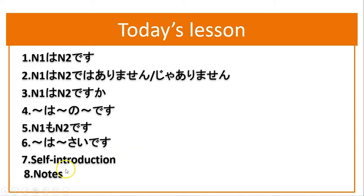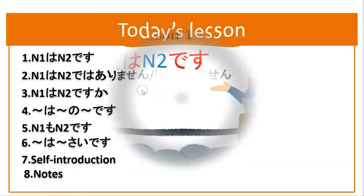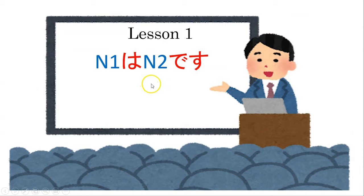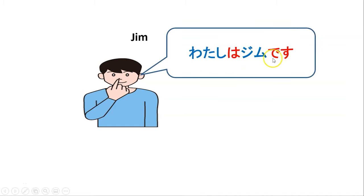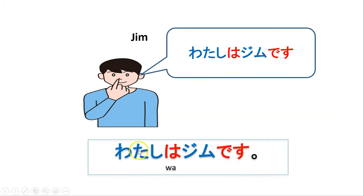So, dewa minasan, Lesson 1. Ang pattern ay N1 wa N2 desu. For example, Jim yung pangalan ko. Gusto ko muna ng sentence na 'Ako si Jim' — 'I am Jim.' Watashi wa Jimi desu. Kung napanood na ninyo yung vocabulary lesson 1, ang watashi ay 'I' in English or 'ako' sa Tagalog. Watashi wa Jimi desu.